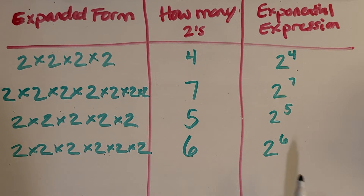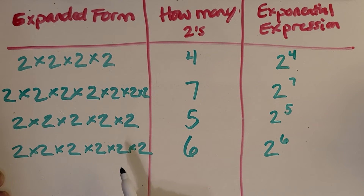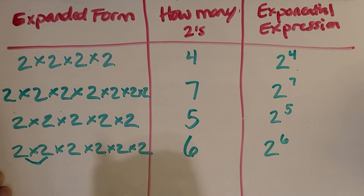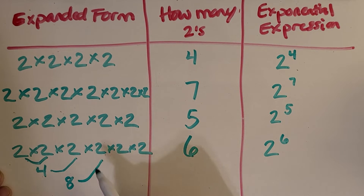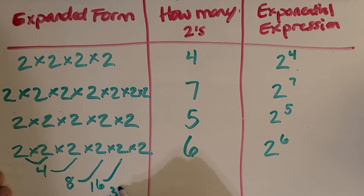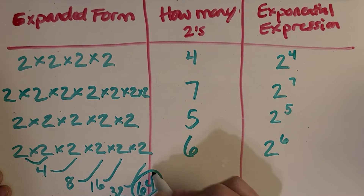Now let's see if we can solve this exponent — what is this worth? I like to start with the expanded form and multiply two numbers at a time. So 2 times 2 is 4, then 4 times 2 is 8, then 8 times 2 is 16. We can really only work with two numbers at a time. 16 times 2 is 32, and 32 times 2 is 64. So 2 to the 6th power equals 64.